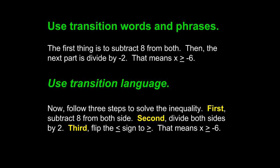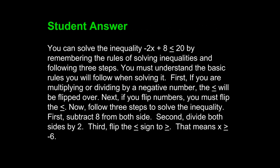Each sentence provides a different step, and words like first, second, and third show the reader what each step is. The student answer is greatly improved: 'You can solve the inequality negative 2x plus 8 is less than or equal to 20 by remembering the rules of solving inequalities and following three steps. You must understand the basic rules you will follow when solving it. First, if you are multiplying or dividing by a negative number, the less than or equal to sign will be flipped over. Next, if you flip numbers, you must flip the less than or equal to sign. Now, follow three steps to solve the inequality. First, subtract 8 from both sides. Second, divide both sides by 2. Third, flip the less than or equal to sign to a greater than or equal to sign. That means x is greater than or equal to negative 6.' Aside from some small mechanical errors, this paragraph is clear. The sentences flow, transition language has helped, and strong subjects provide clear focus.